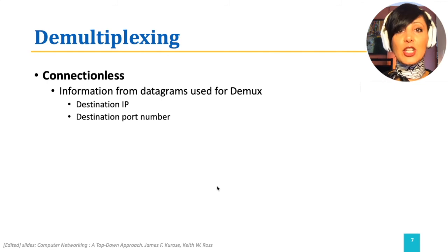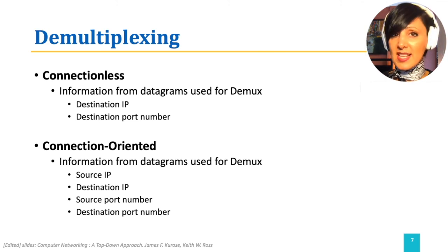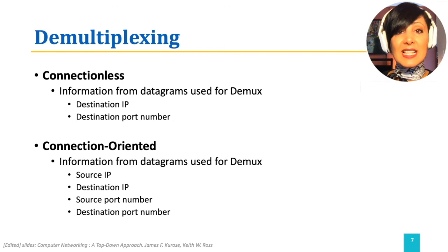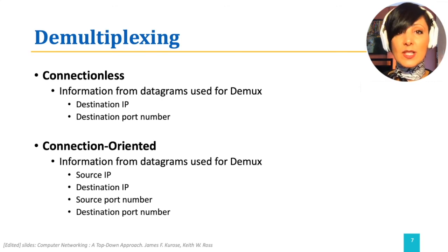In connection-oriented demultiplexing, there is a connection, like a pipe, between the sending and receiving processes. So there is a need to relay processes at the sending and receiving sites. This is done by processing the port number and IP address for source processes in addition to destination process information.